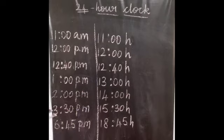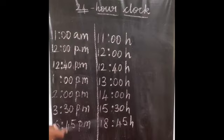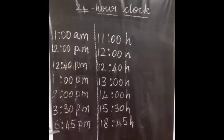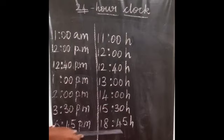Here it is 3:30 PM. So you have to add 12 to 3. What is 12 plus 3? It is 15, so 15:30 - that is 30 minutes. Then if the time is 6:45 PM, 12 plus 6 is 18, so 18:45.